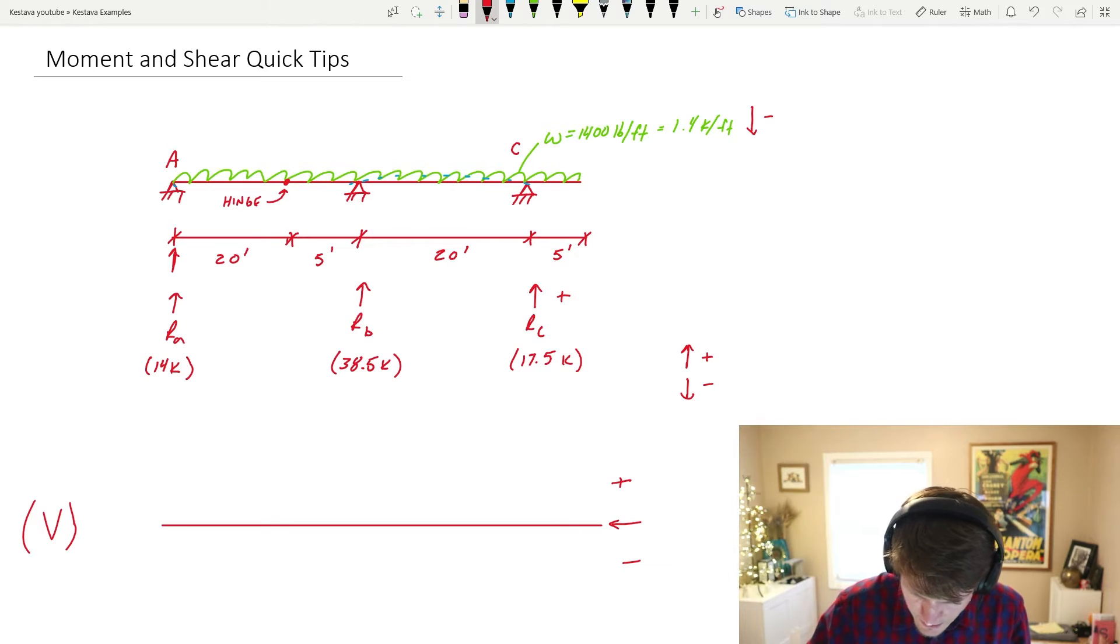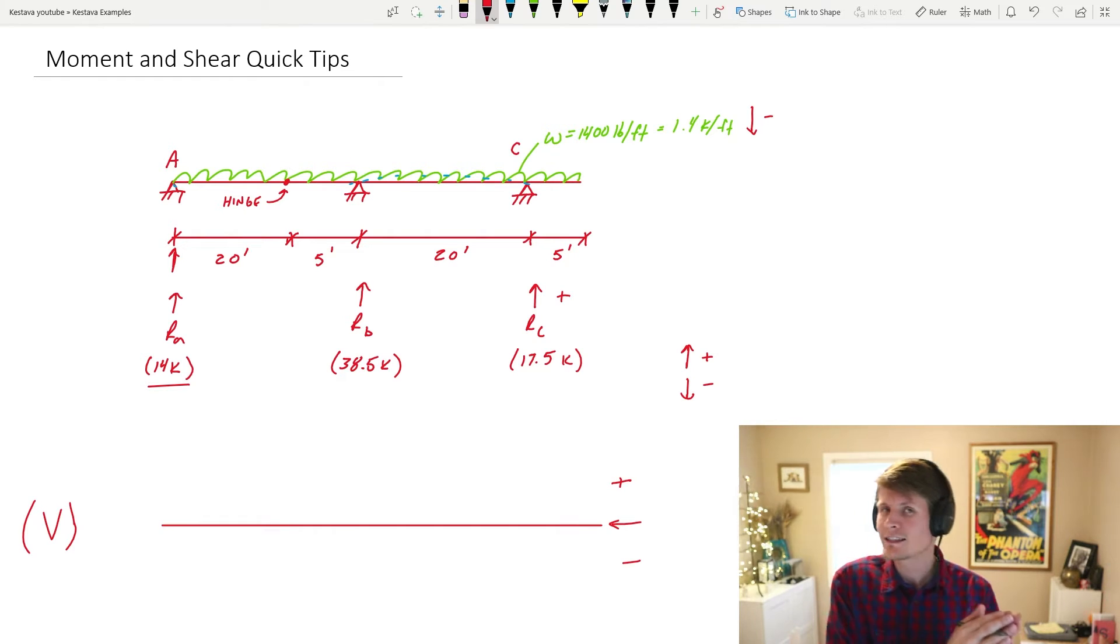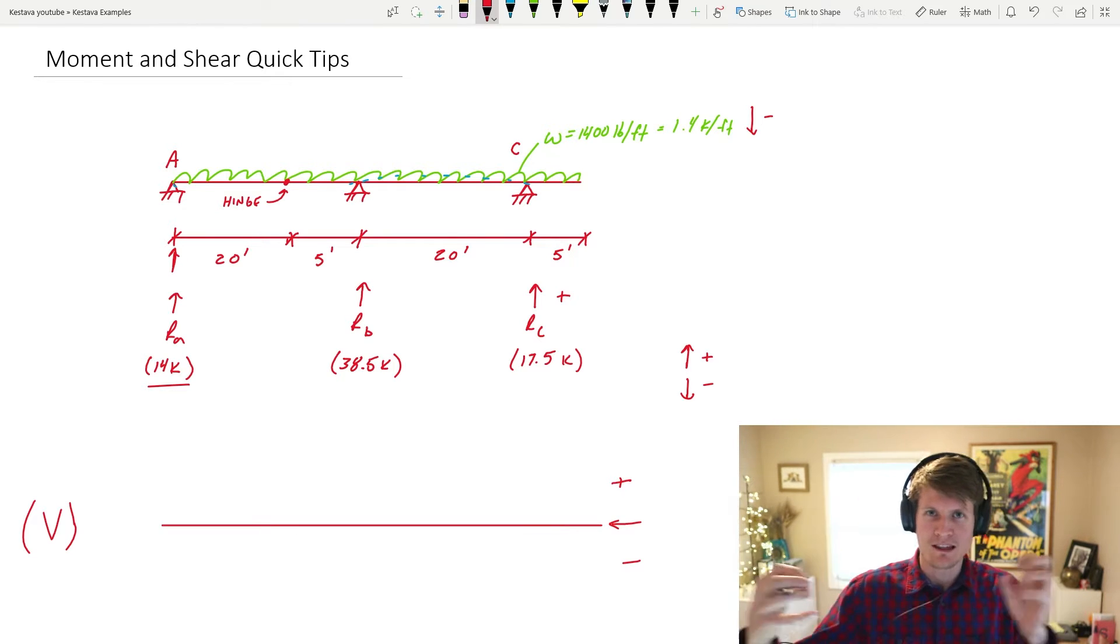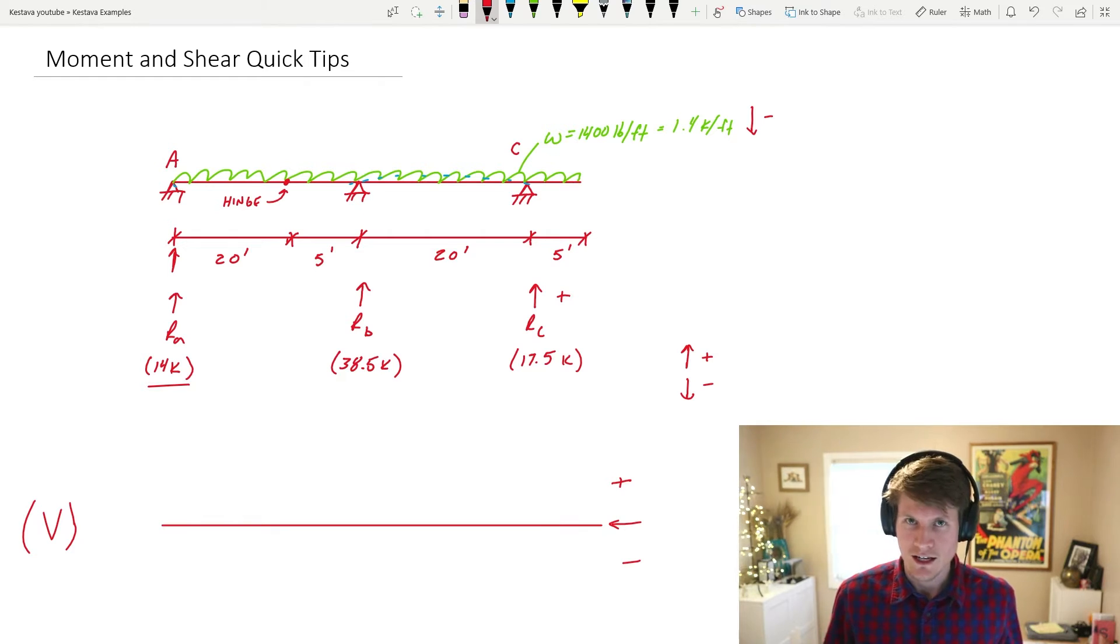This W, the green loading here, the uniformly distributed load, is technically a negative load because it's applying continuous load downward. And at all of our reactions, in order to have a balanced system in equilibrium, those reactions need to be applying a point load going upward to resist all of that downward uniform load. So that means all the reactions are positive and the arrows subsequently going upward visually show that as well. So I'm going to start on the left-hand side.